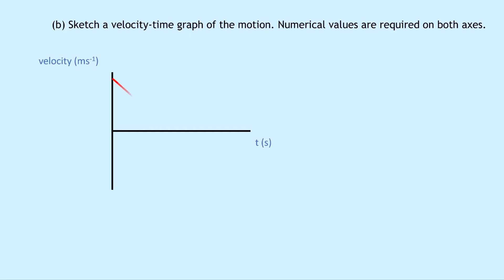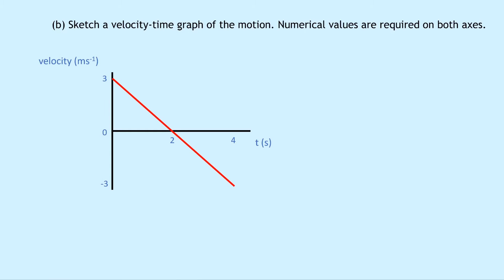Drawing our axes and labels — velocity in metres per second and time in seconds — the graph would show a straight line going down through a velocity of 0 metres per second. We have 3 metres per second at the start, and after 2 seconds the ball reaches 0 metres per second as it collides with the wall. It then starts travelling in the other direction up to minus 3 metres per second, because it's travelling in the opposite direction to begin with.